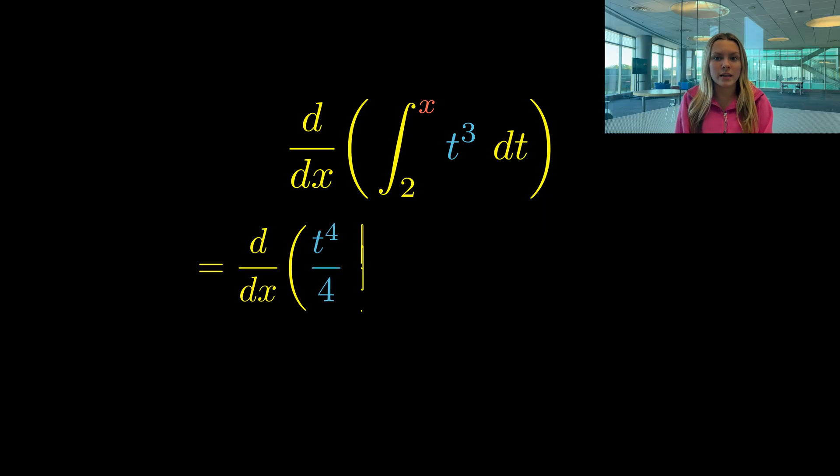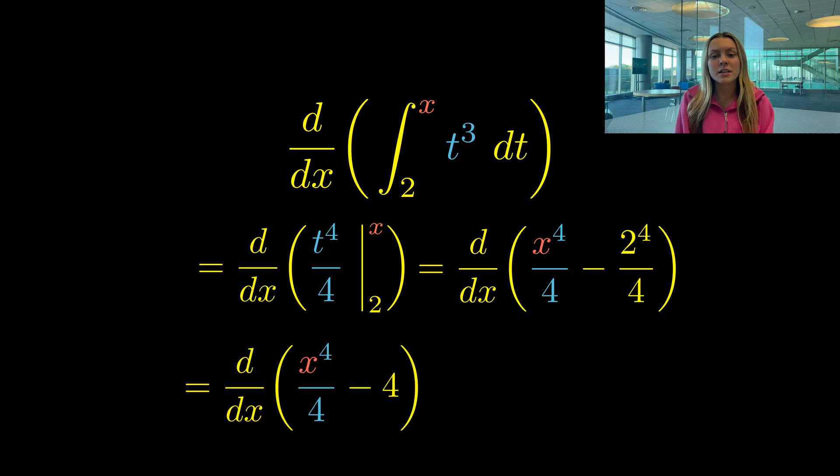And now we need to plug in the upper limit and the lower limit. So we will get x⁴/4 minus 2⁴/4, which is the same thing as x⁴/4 minus 4. The derivative of this parenthetical will be 4x³/4 by the power rule, and the fact that the derivative of minus 4 is 0.